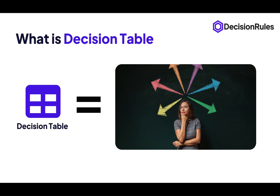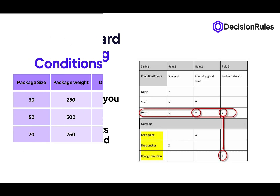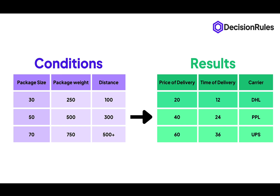Let's start with an explanation of what is a Decision Table. It is essentially a visual representation of a specific action which should be performed depending on the given conditions. Decision Tables are one of the market standards for decisioning. Essentially, what you do in a Decision Table is that you are describing all possible scenarios that might happen and the actions that should follow. To explain the use of Decision Tables, we will pick a use case of package delivery.